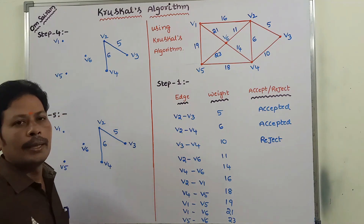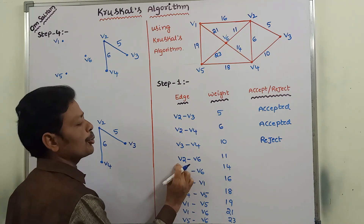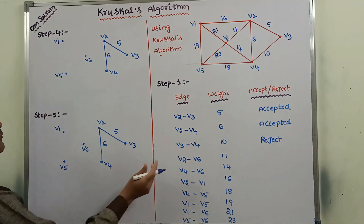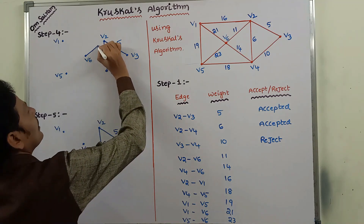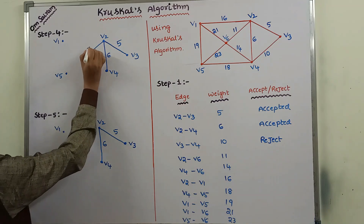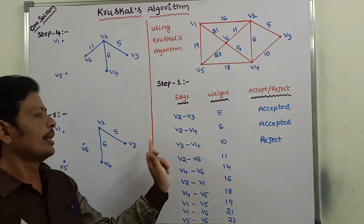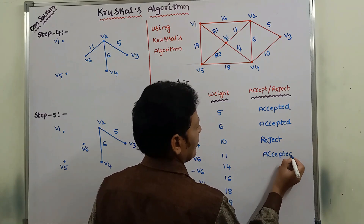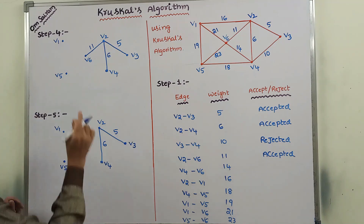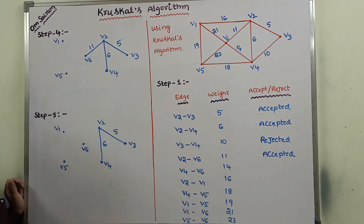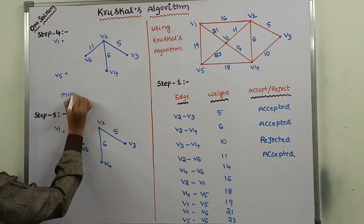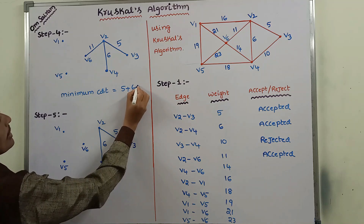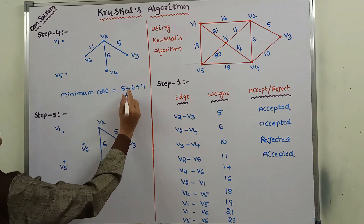Next, we go for the next minimum weighted edge: V2 to V6, weight 11. After adding this edge, is any cycle formed? No, there is no cycle formed. So this edge is accepted. After adding V2 to V6, the minimum cost is equal to 5 plus 6 plus 11, which is 22.